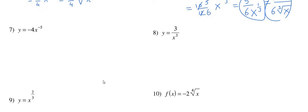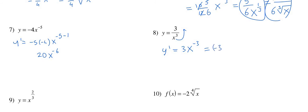Example 7: the power is negative 4. Bring negative 4 to the front, negative 4 times negative 5 gives positive 20, and subtract 1 from negative 4 giving negative 5, so the result is 20x to the negative 5. Be careful with negative powers — you still subtract 1. Example 8: rewrite 3 over x cubed as 3 times x to the negative 3, then apply the power rule. Bring negative 3 to the front times 3 gives negative 9, subtract 1 from negative 3 giving negative 4, so the result is negative 9x to the negative 4.